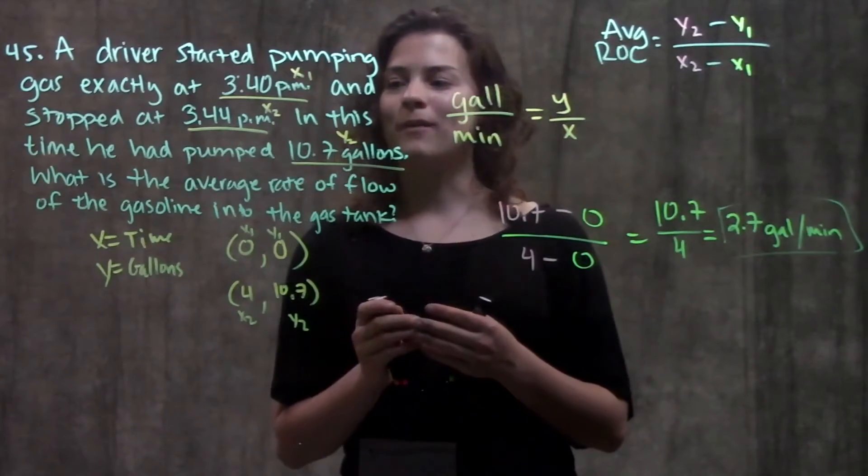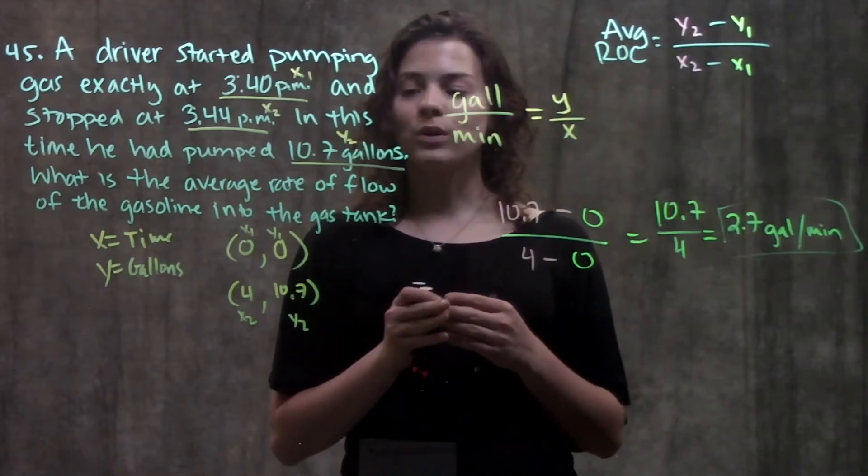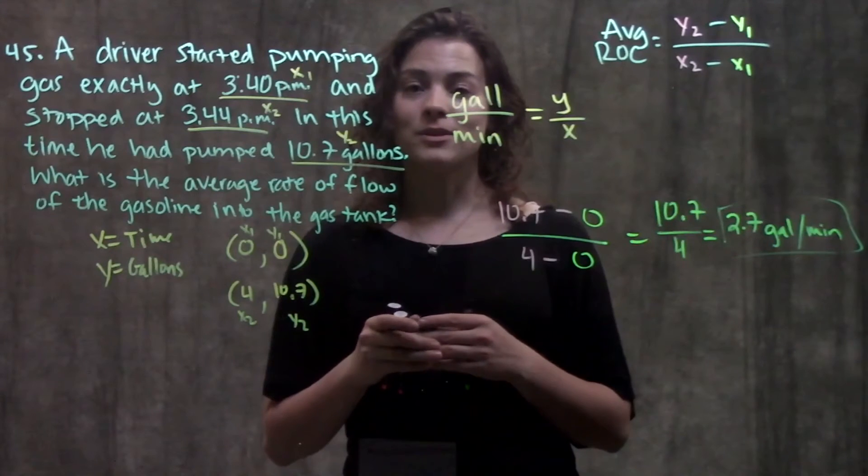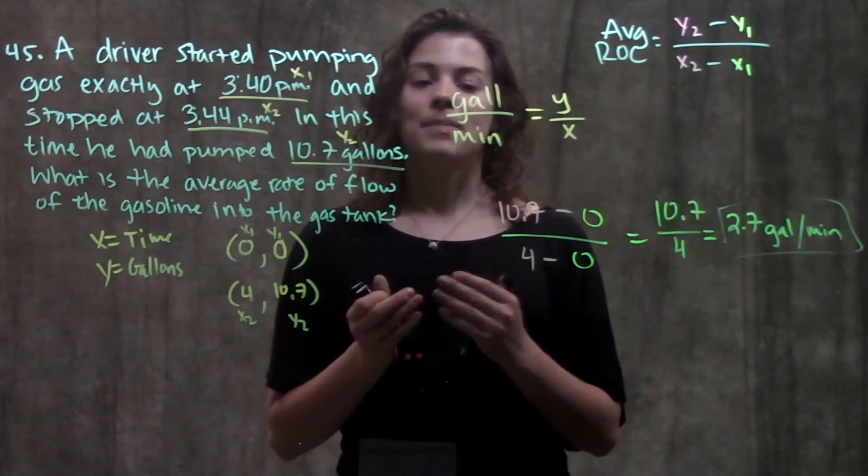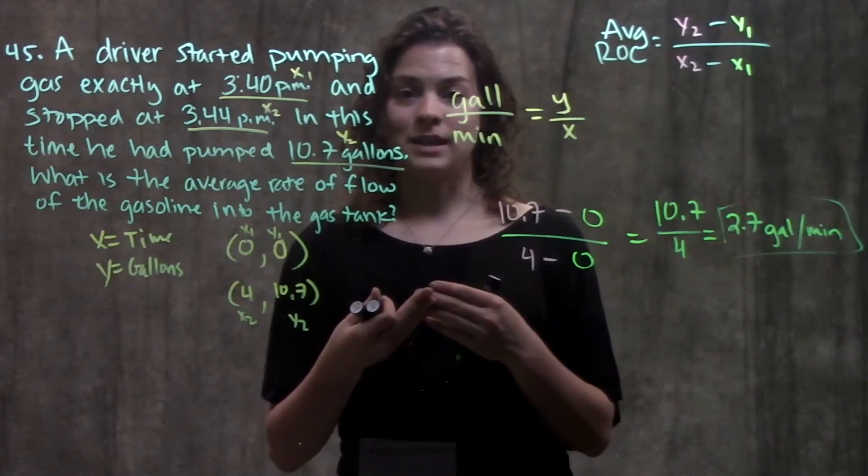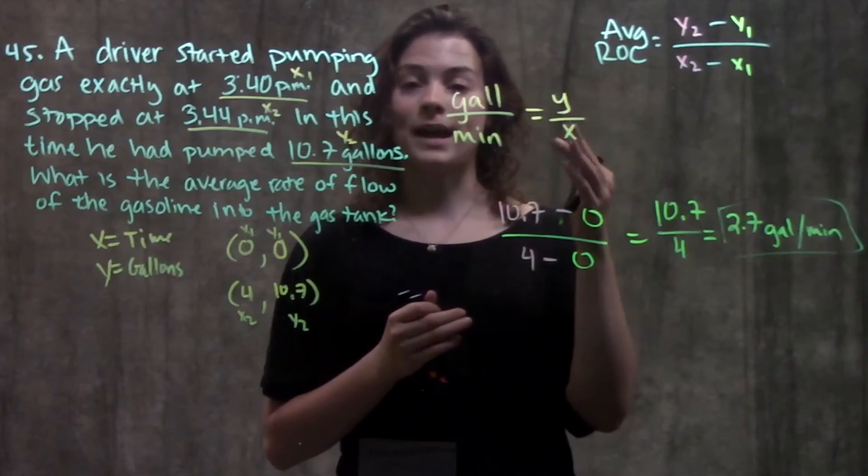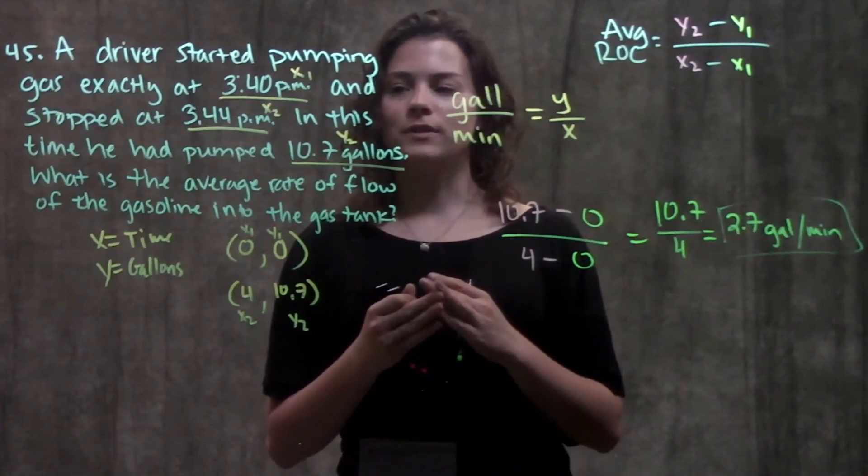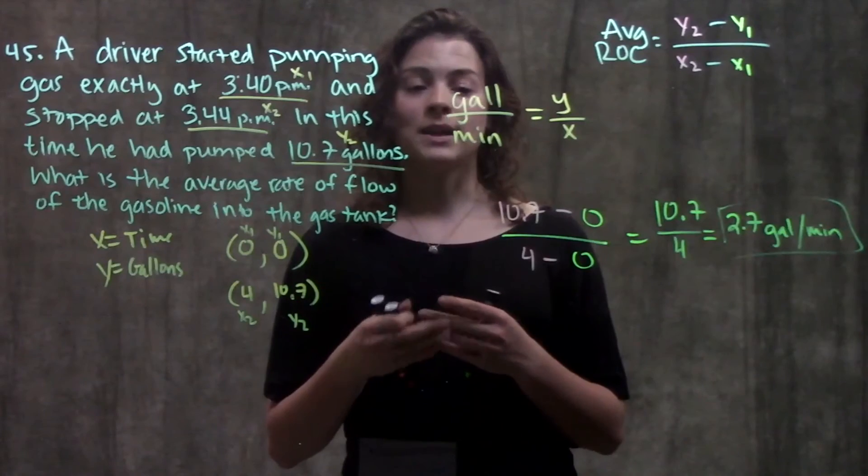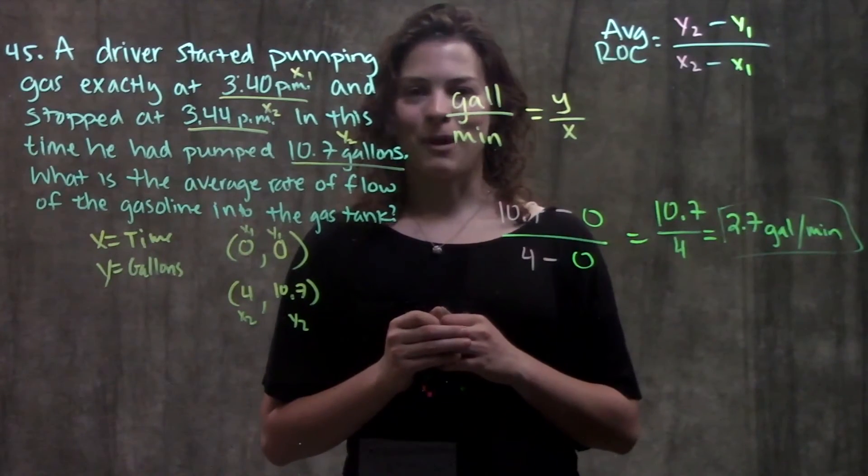I think probably the hardest part was going through the word problem and identifying what your variables were and what values corresponded with those variables. But remember, you can think about it in terms of what would you answer the question in. In this case, we'd answer it in terms of gallons per minute. So that tells what our y and x values were. Or you can also think that if you have a unit of time, that's most likely going to be what your x value is. Other than that, that's it for this problem.